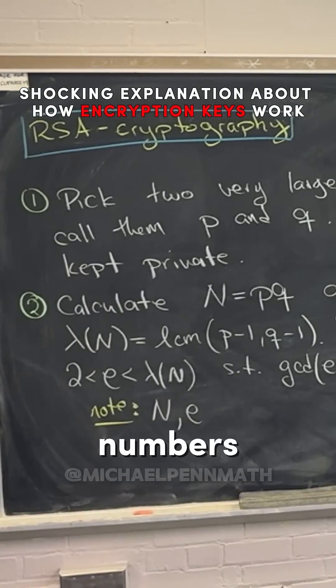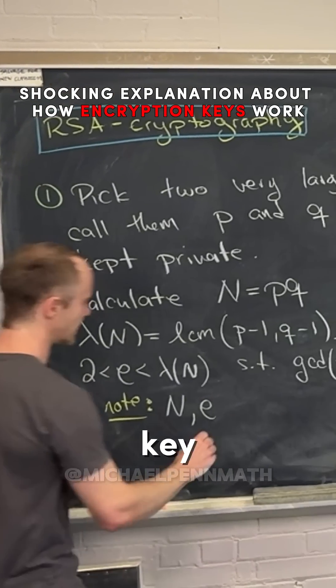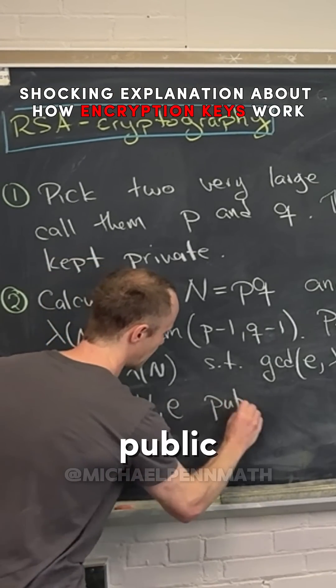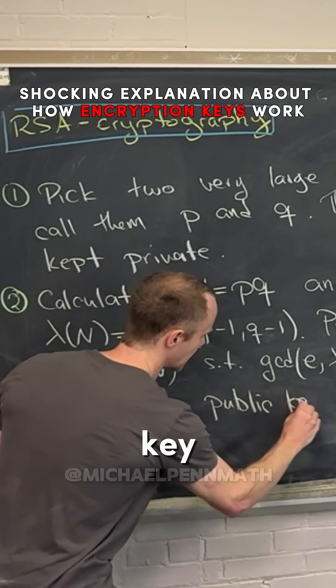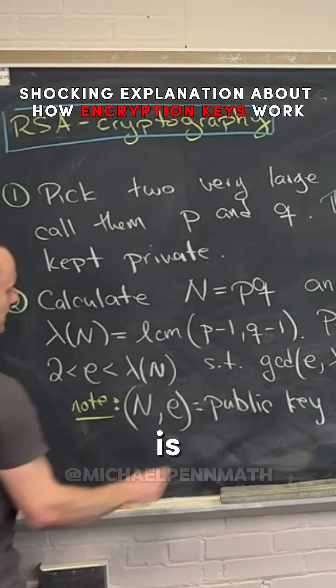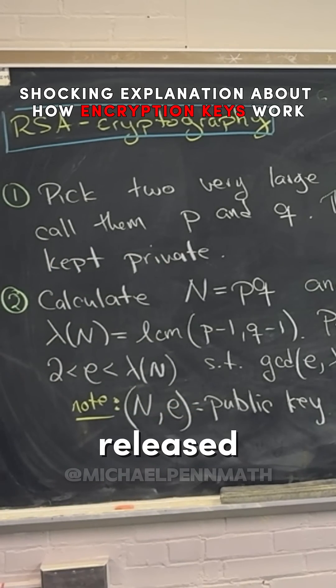So N and E, those two numbers are what's called the public key. This is the public key and this is what can be released publicly.